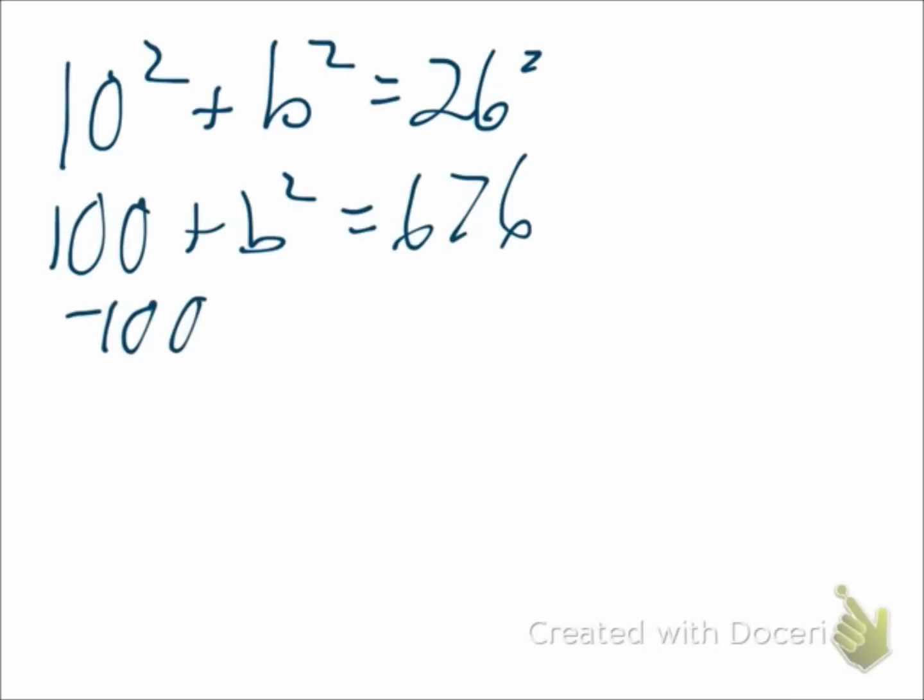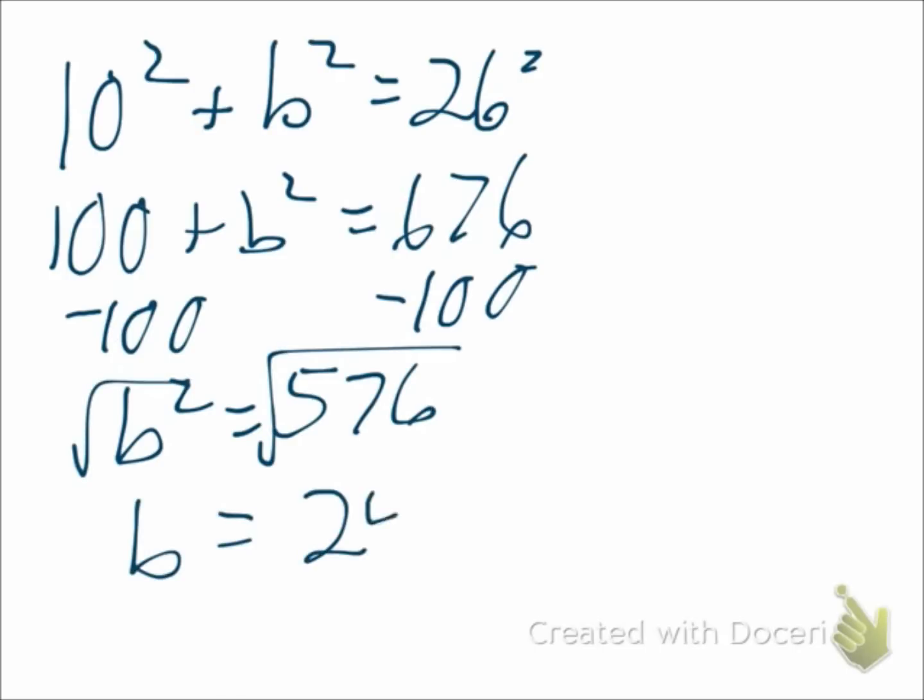Subtract 100 from each side. B squared is 576. And when you square root, B is 24.